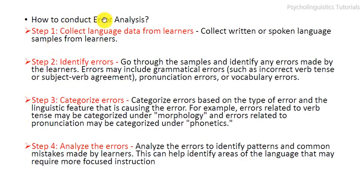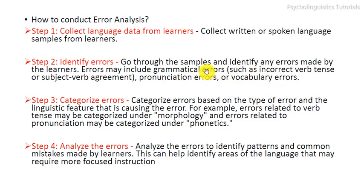Here is a general methodology for conducting error analysis. Step one is to collect language data from learners — written or spoken language samples. Step two is identifying errors: go through the samples and identify any errors made by learners, including grammatical errors such as incorrect verb tense or subject-verb agreement, pronunciation errors, or vocabulary errors.